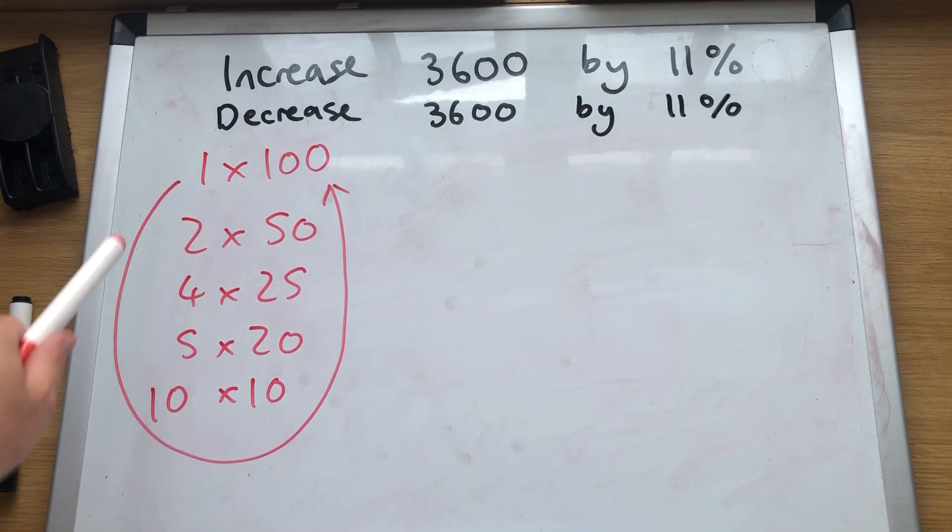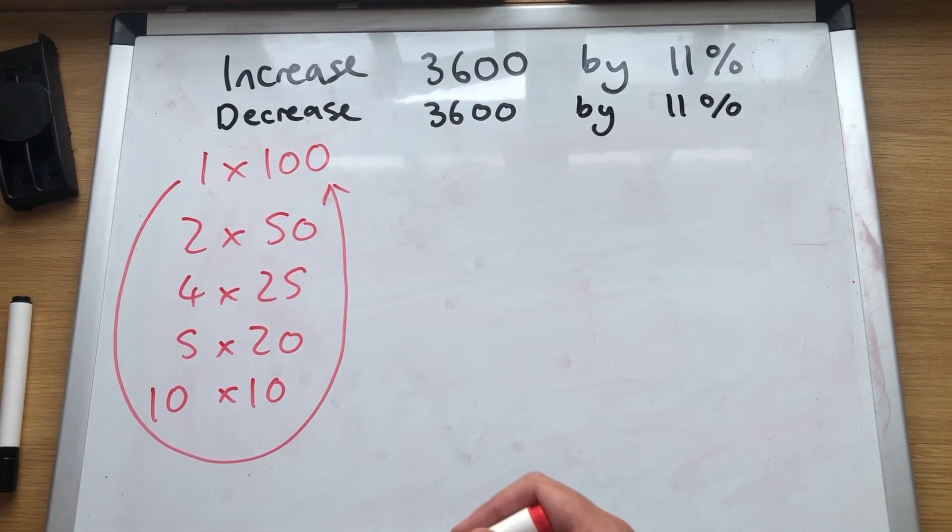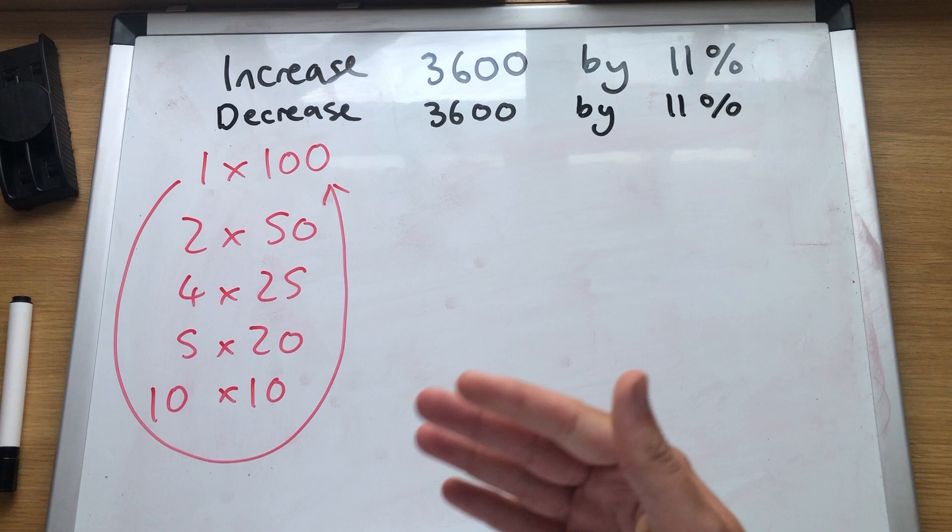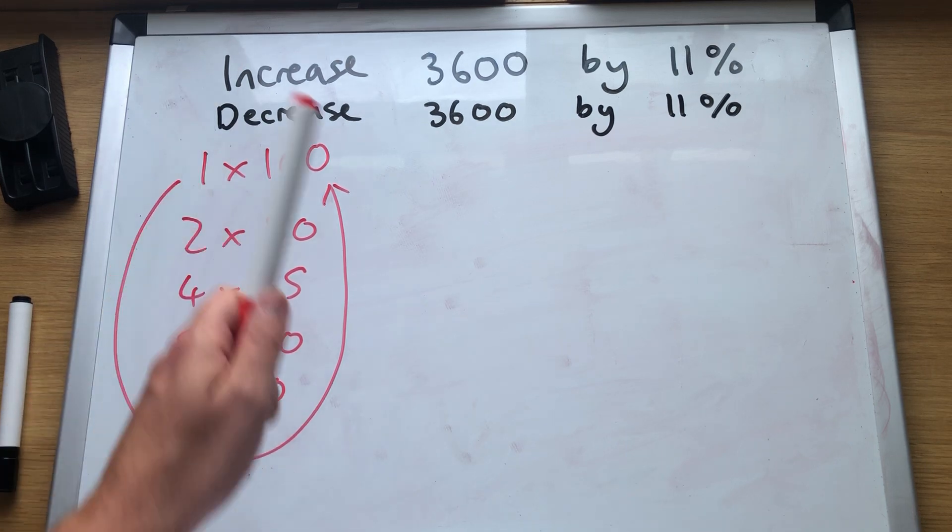I've already drawn out the factors of 100. We are looking at numbers that will add to make 11, or subtract to make 11. Again, there is no wrong way of doing it. Whatever numbers make 11, you're doing it right. I think the easiest way is let's use 10 and let's use 1.